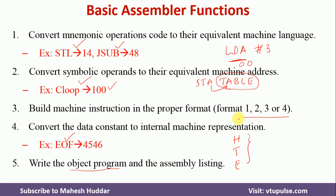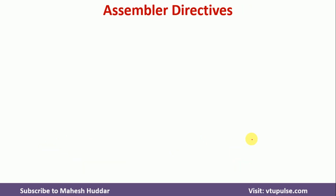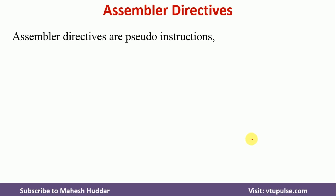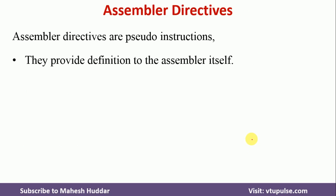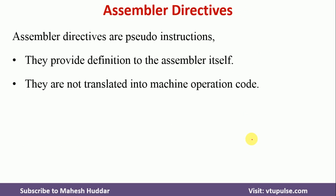Now we will discuss assembler directives. Assembler directives are pseudo-instructions — they provide definitions to the assembler itself and will not be converted into machine operation codes, but they play a very important role in assembly language programs. For example, START specifies from where the program should be loaded, and END specifies the starting address and the end of the program.